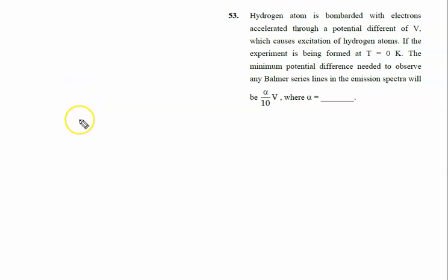Hydrogen atom is bombarded with electrons accelerated through a potential difference of V. When the hydrogen atom is bombarded, it will be excited to a higher energy level.